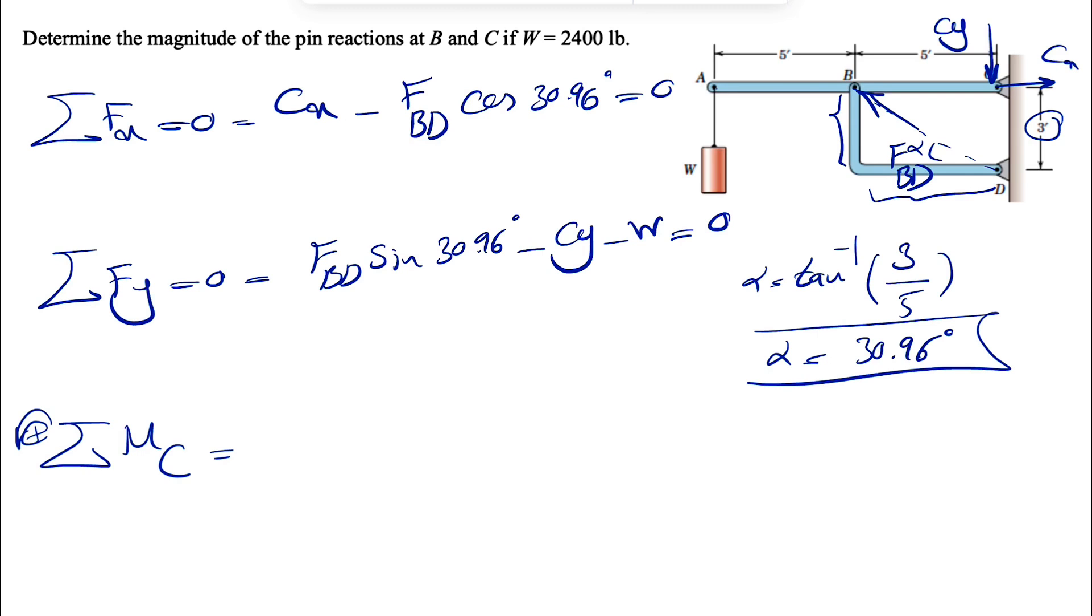And if we go with the moment about point C, counterclockwise positive, we're going to have the moment of the weight, which is in this direction. We call it W. About point C, this is going to be in counterclockwise direction. So positive W times the length of A to C, which is 5 plus 5 or 10.